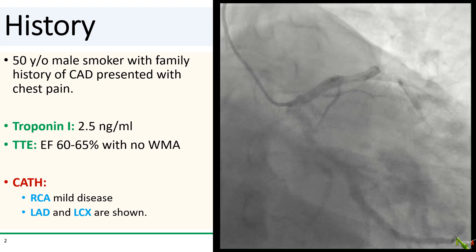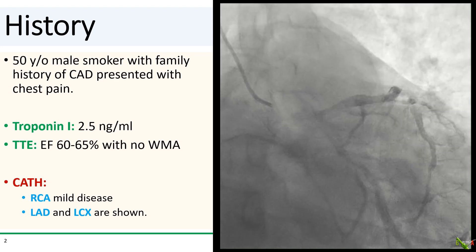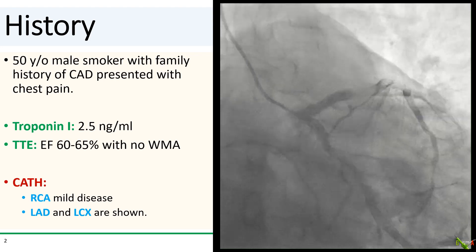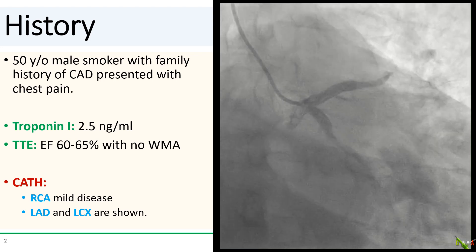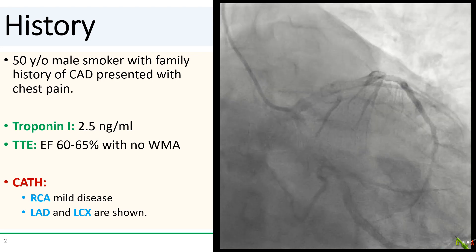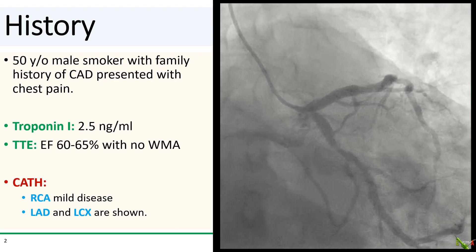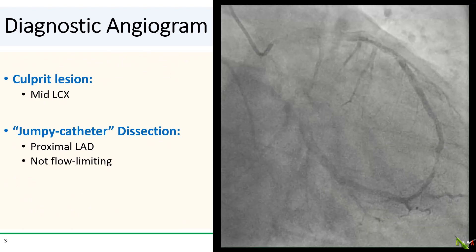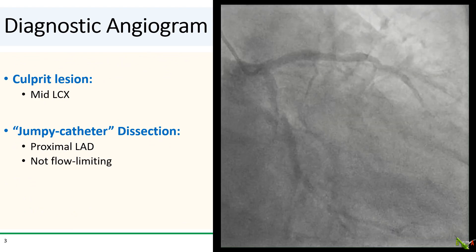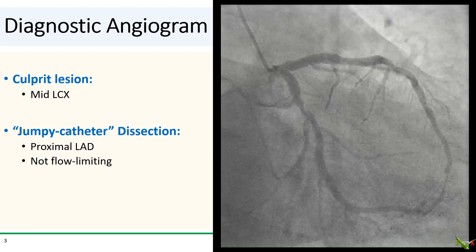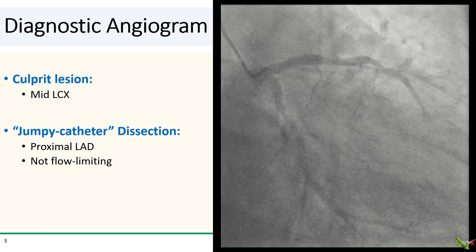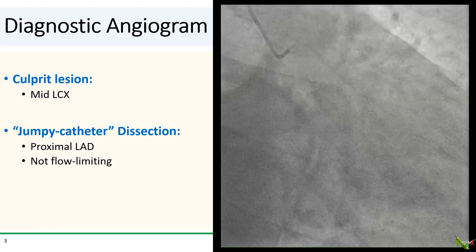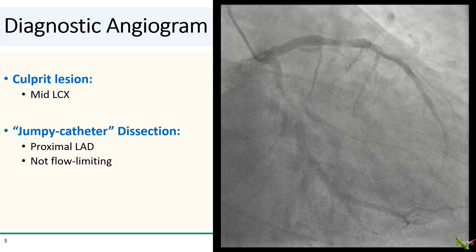You'll notice the catheter jumping into the left main, and this kept happening repeatedly as the patient took breaths. Look carefully — you might see a hint of dye staining in the proximal LAD. The culprit for the NSTEMI is the severe stenosis in the mid-circumflex. But you'll notice an iatrogenic lesion as well from the jumpy catheter — there is a focal catheter dissection in the proximal LAD.